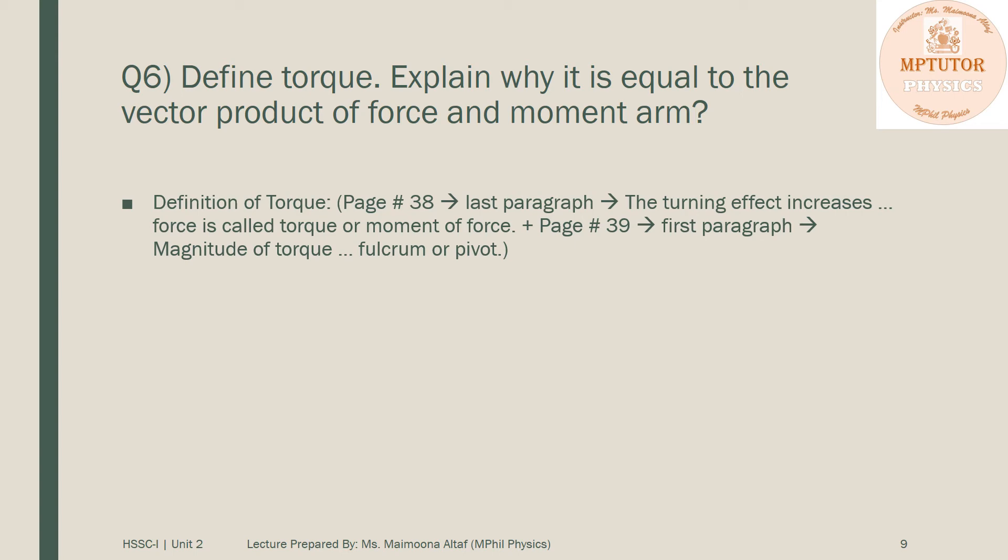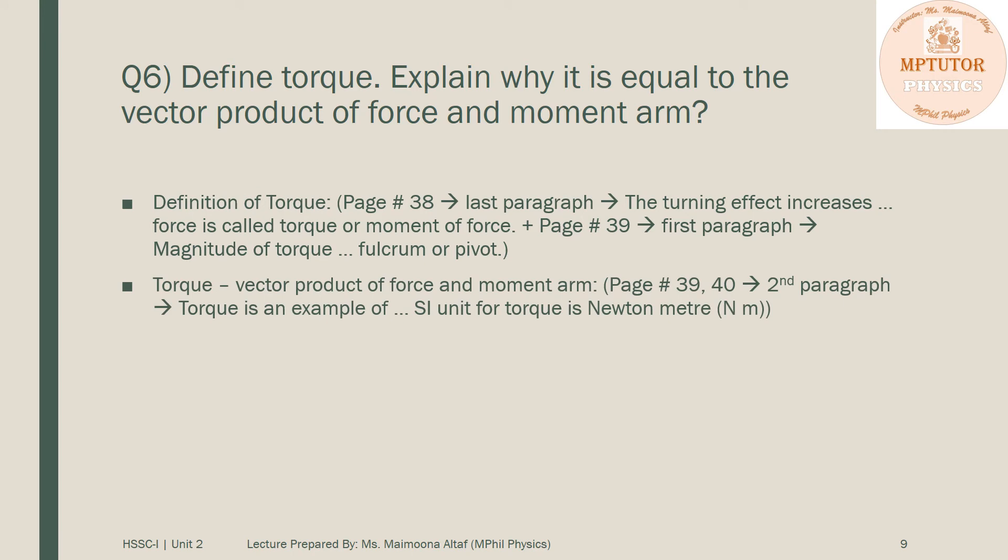Plus page 39 first paragraph: magnitude of force up till fulcrum or pivot. After that, torque is a vector product of the force and moment arm - the answer for this part is on pages 39 up to page 40. Start from the second paragraph: torque is an example of... up till the SI unit for torque is newton meter. You also have to draw the diagram given on page number 39.